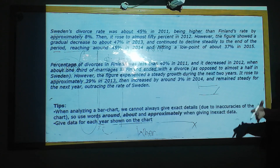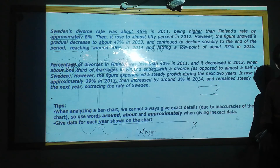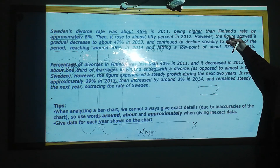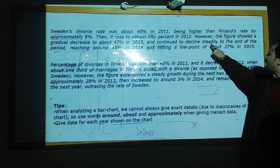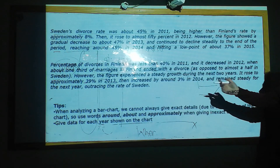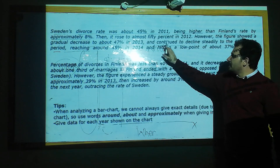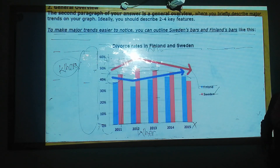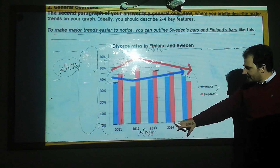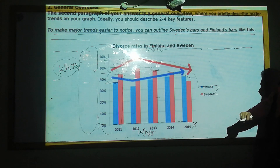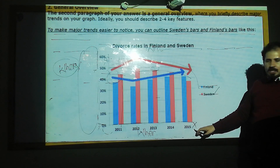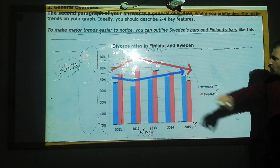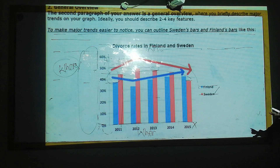We want to conclude because in our first supporting paragraph, words are more than enough — 150 words are very easy to complete. So we say: it continued to decline steadily to the end of the period, reaching around 45% in 2014, and hitting a low point of about 37% in 2015. This is my first supporting paragraph.